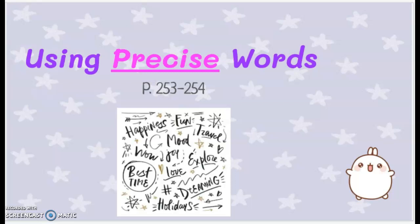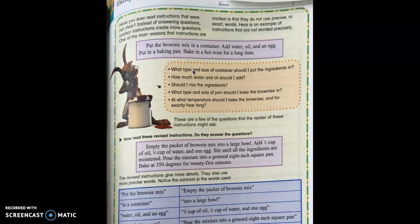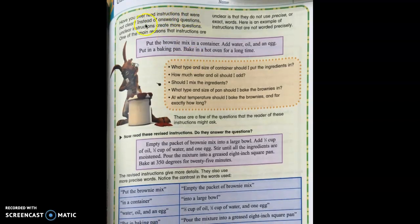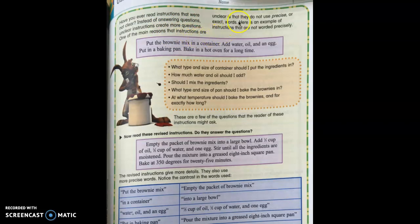First, let's read on top of page 253 together: "Using precise words. Have you ever read instructions that were not clear? Instead of answering questions, unclear instructions create more questions. One of the main reasons that instructions are unclear is that they do not use precise or exact words." Here's an example of instructions that are not worded precisely.